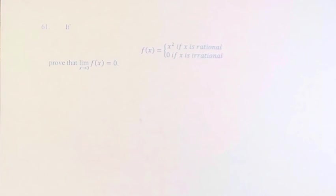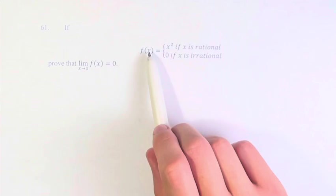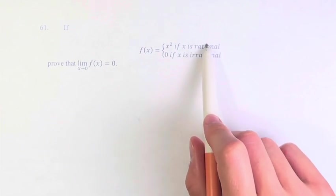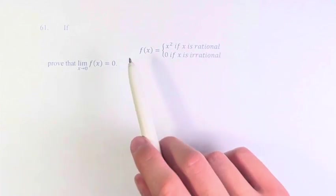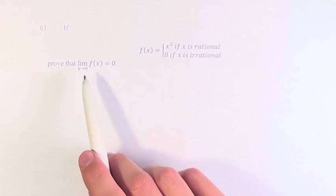Hello, and welcome back to another video. In this problem, we're asked if f of x is equal to x squared if x is rational, and 0 if x is irrational, prove that the limit as x approaches 0 of f of x equal to 0.